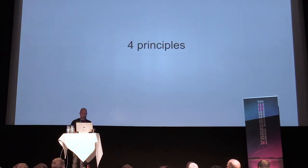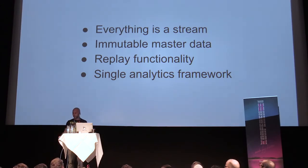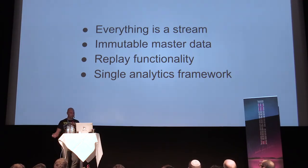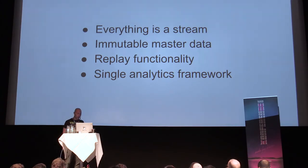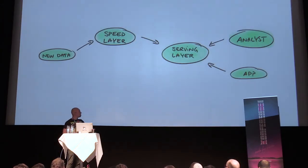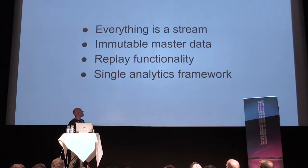He formed four principles for his Kappa architecture. First, everything is a stream - if you push batches every day, that's basically a stream of very big messages. Second, immutable master data - he wanted that. Third, replay functionality. Fourth, a single analytics framework - this was really important. He talked about KISS - keep it simple, stupid. Simplicity was a big drive in this architecture, which is a really good drive for an architecture.